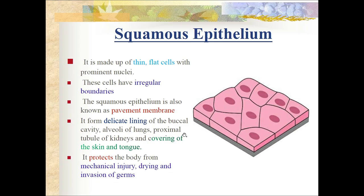Squamous epithelium is also present in the proximal tubule of the kidney - the first region of the nephron after the glomerulus - and the covering of the skin and tongue. It protects the body from mechanical injury, drying, and invasion of germs.